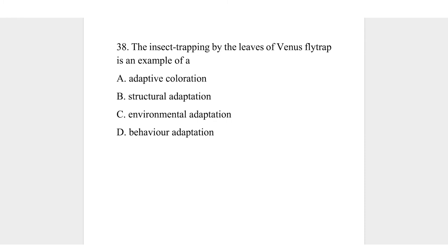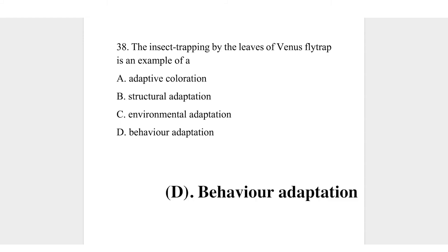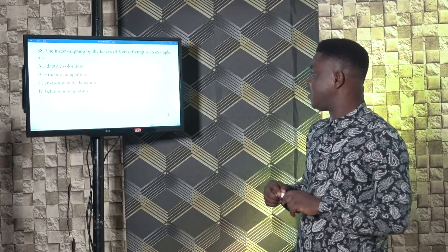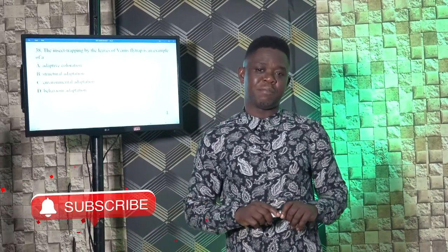Question 38. The insect trapping by the leaves of a Venus fly trap is an example of a behavioral adaptation. The Venus fly trap has hairs called triggers. Whenever anything touches these hairs, the leaves flip and close, trapping whatever is in between the leaves. That kind of adaptation is called behavioral adaptation. The correct answer is D, behavioral adaptation.